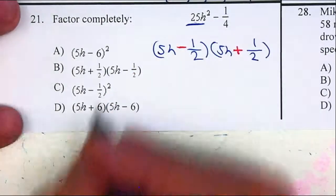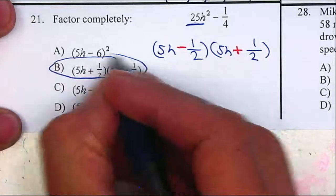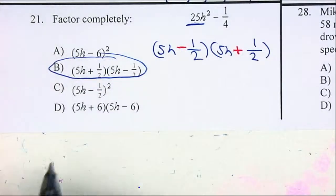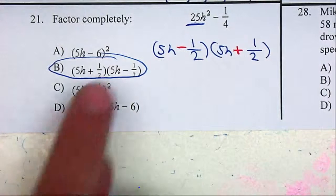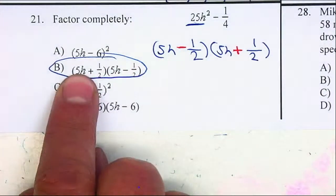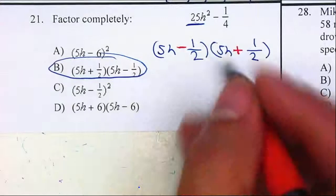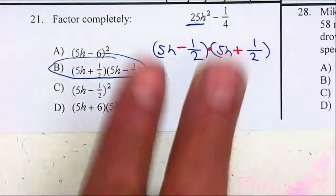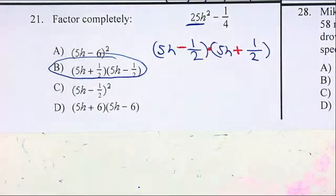So my answer will be letter B. Notice that they place the negative second and the positive first. It doesn't matter since they're multiplying. The commutative property tells us that the order does not matter.